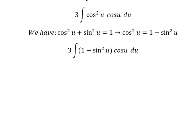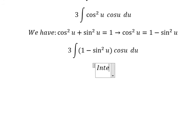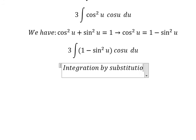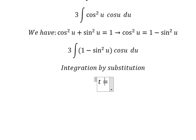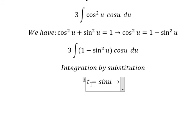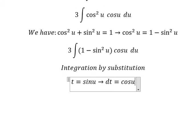Next we need to use integration by substitution again. I will put t equal to sine u. Then we take the first derivative for both sides and we get dt equal to cosine u du.